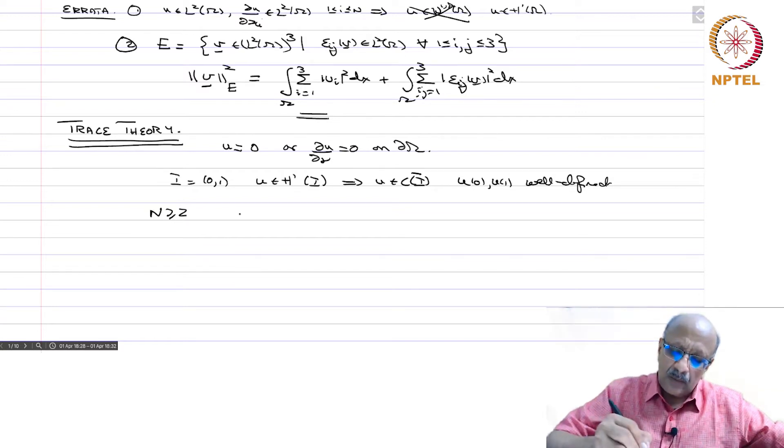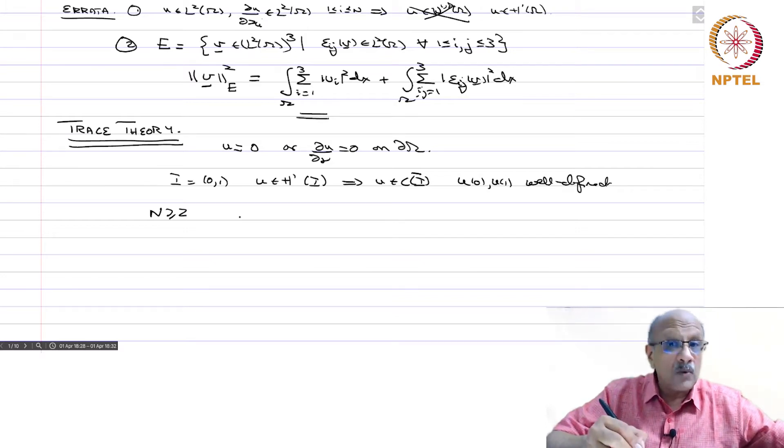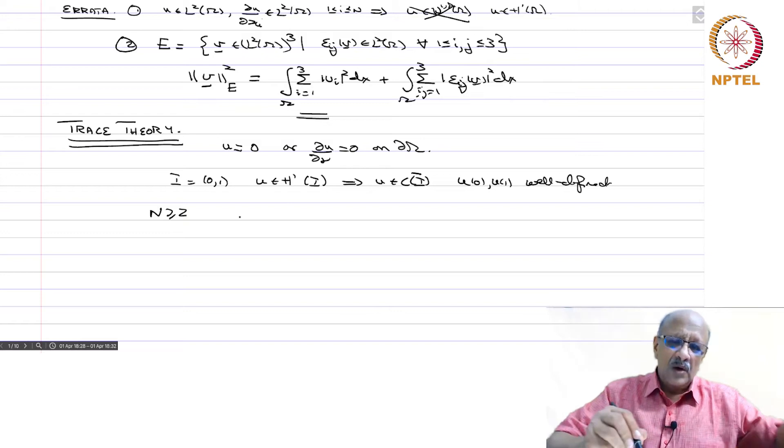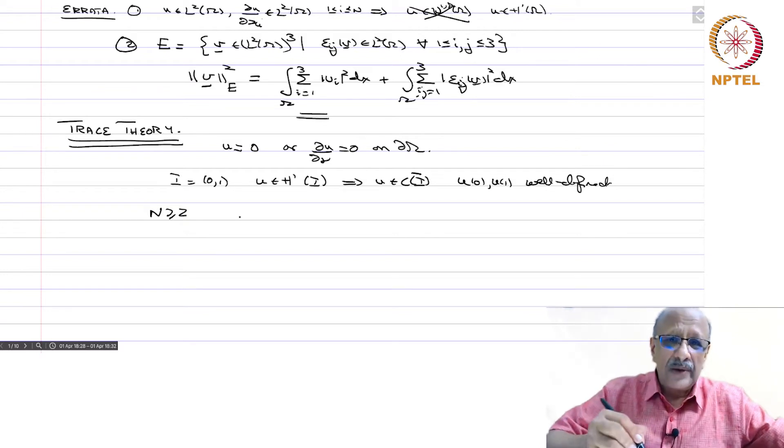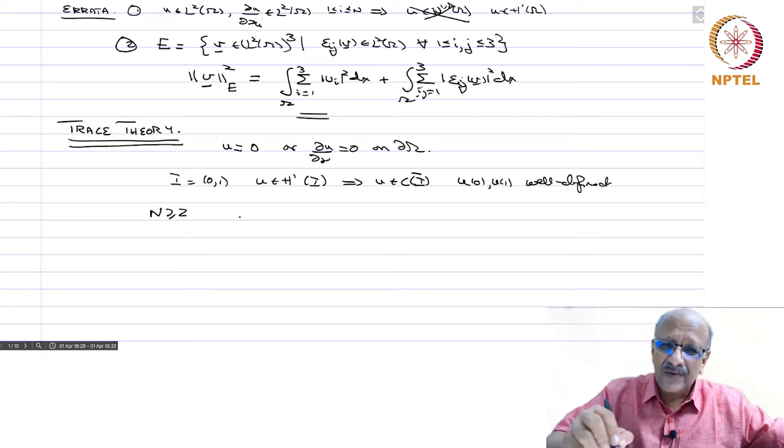So what do we mean by u on the boundary? Now if you take a function u in L2 of omega, and H1 functions or W1 p functions are all in Lp and therefore these are only defined almost everywhere. And the measure of the boundary is 0, and therefore it does not make sense to talk of the value of u or the value of derivatives of u on the boundary. But we want to make use of the fact that we know something more about the derivatives of the function, namely there also in Lp spaces, and using that we wish to give a meaning to what is meant by u restricted to the boundary or d u by d nu restricted to the boundary and so on. And these are called traces of the function on the boundary, and that is why we call this trace theory.